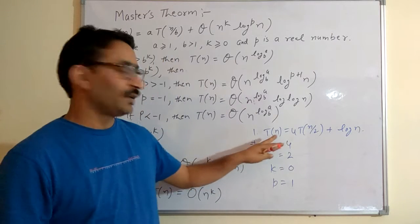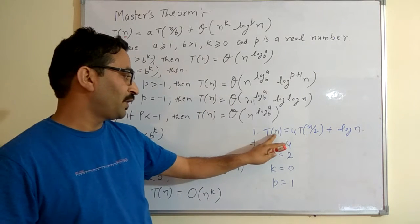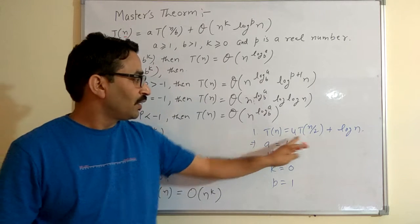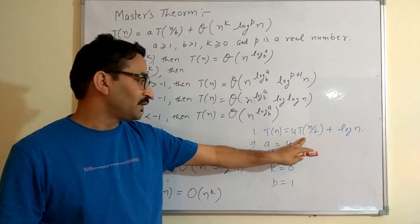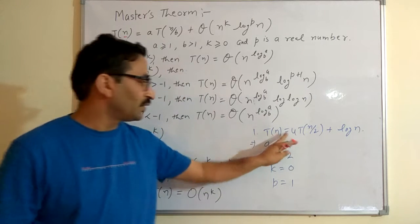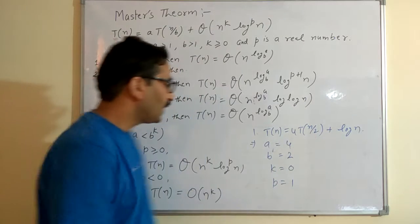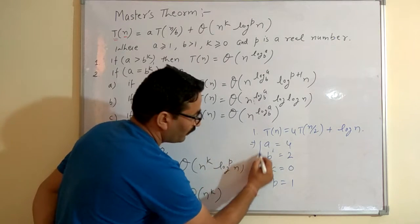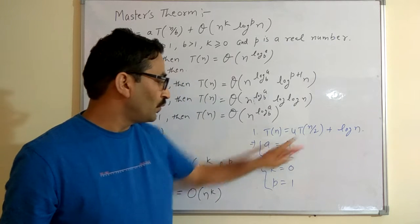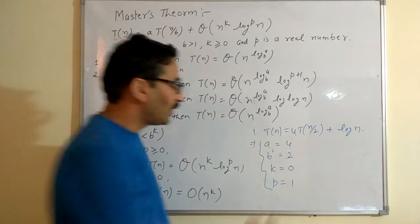Let's solve another example on the Master Theorem. Our first example is: T(n) is equal to 4T(n/2) plus n·log(n). This is our recurrence equation of a recursive algorithm. First, find out the values of a, b, k, and p. Here a is equal to 4, b is equal to 2, k is equal to 0, and p is equal to 1.